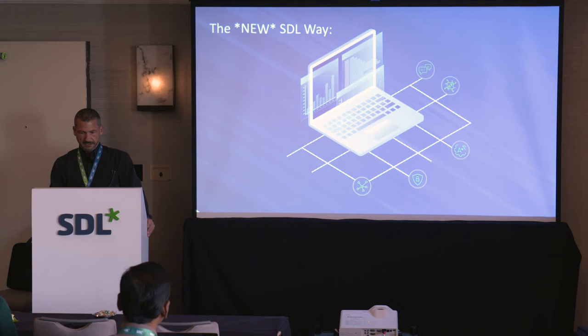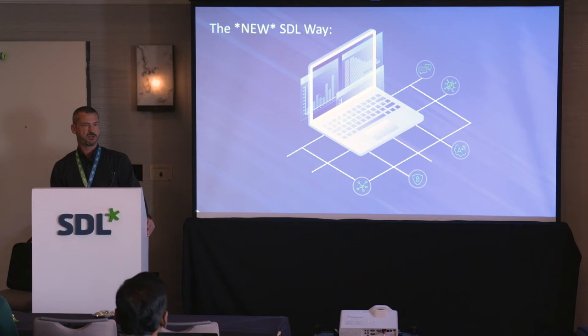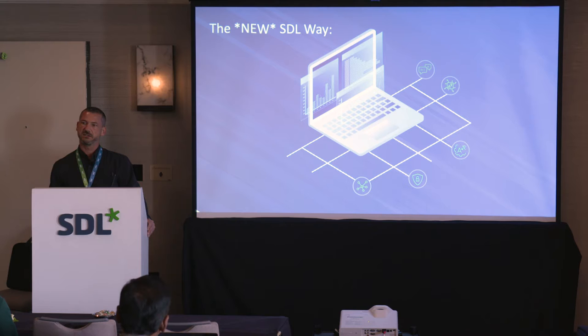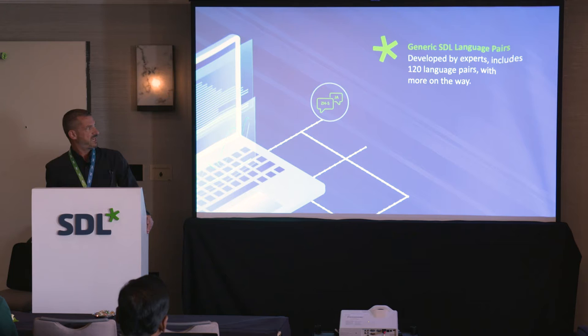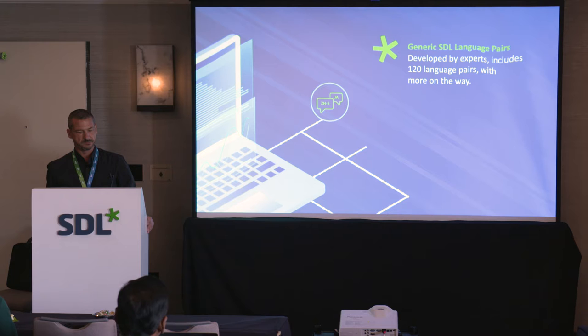We introduced this year a new way to adapt machine translation, and we know that adapting machine translation is actually key for enterprises. Generic models are great for most generic content, but when you have very specific content, it's critical to be able to adapt and adjust it so that machine translation gets better at translating your content. At SDL, we have more than 120 generic language pairs, including foundational data with all the generic information used to create these generic models.